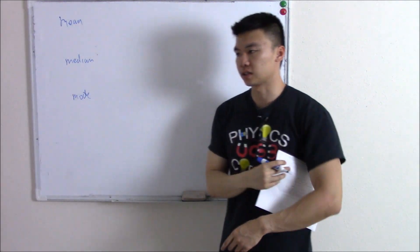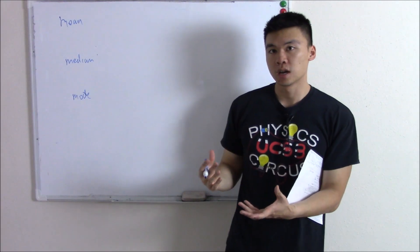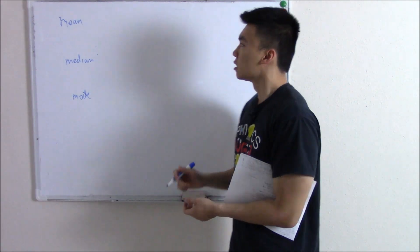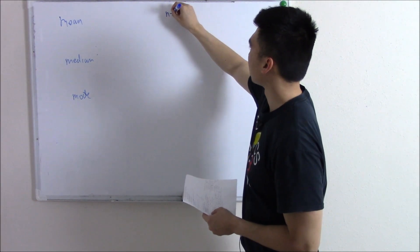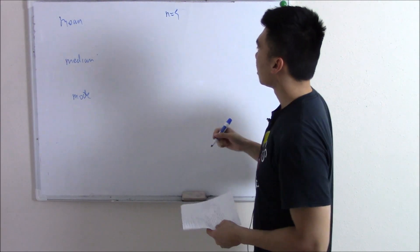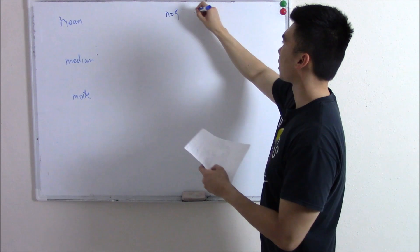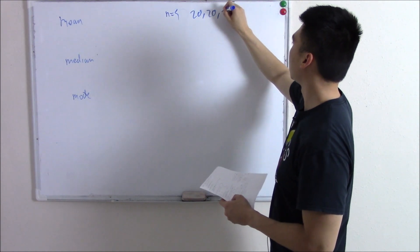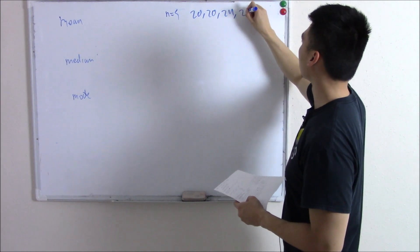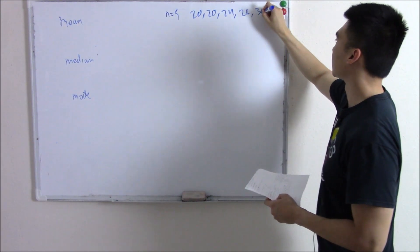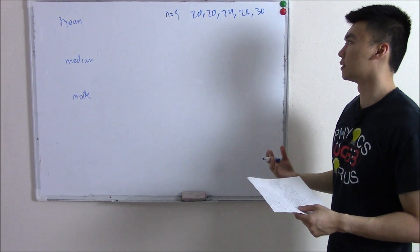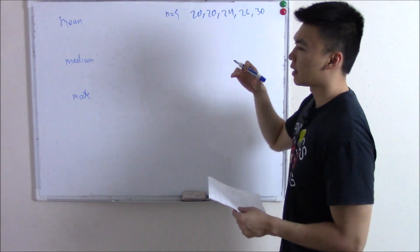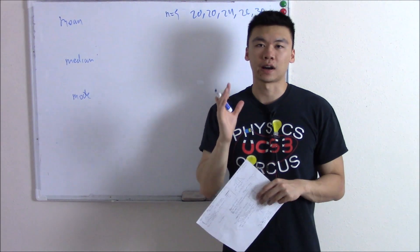Let's say you want to find out the average age of med students in your med school. So you get five people — a sample size of five. You ask them their age: someone says 20, 20, 24, 26, and then someone that's 30. And you want to find the average of these.